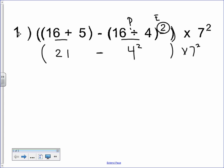Now we have subtraction and exponents. Exponents come next. Remember, 4 to the second power is not 8, it's 16. So this becomes 21 minus 16. Still in parentheses. Bring down the rest of the problem. 21 minus 16 is 5.